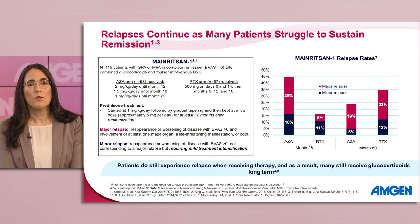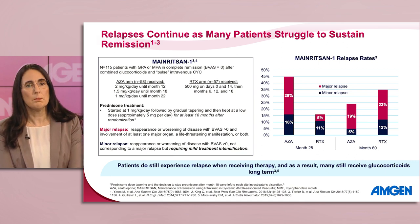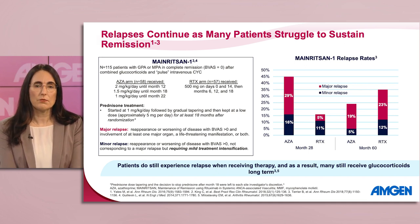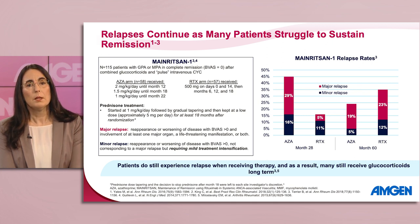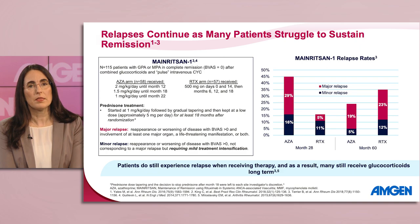At month 28, 45% of patients in the azathioprine arm and 16% of patients in the rituximab arm experienced a minor or major relapse. Of those who were previously relapse-free, an additional 24% of patients in the azathioprine arm and 35% of those in the rituximab arm experienced a major or minor relapse. However, it's important to note that at the 60th month time point, patients had been off maintenance therapy, having received their last dose of azathioprine at month 22 and rituximab at month 18.